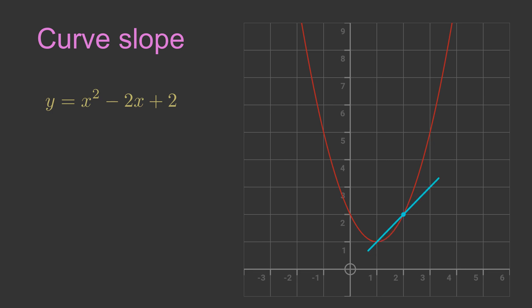If the line had a slightly shallower slope, the line would cross the curve rather than just touching the curve. If the line had a slightly steeper slope, again the line would cross the curve rather than just touching it. The tangent is the only line that touches the curve without crossing it. The slope of the tangent is equal to the slope of the curve at that exact point.